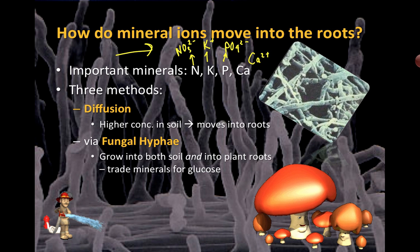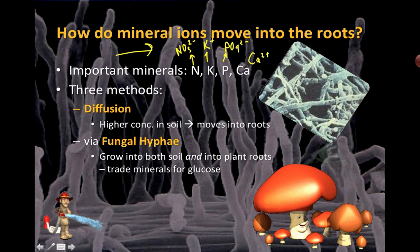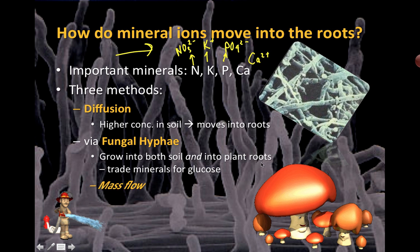There's a symbiotic relationship that can also happen between fungi and the actual plants themselves, with a little trade-off. Minerals can be traded for glucose — some of the glucose manufactured during photosynthesis can be transferred over to the hyphae, which are the branches when a fungus grows. Those roots of the fungus, the hyphae, can actually be branched together with the roots of the plant.